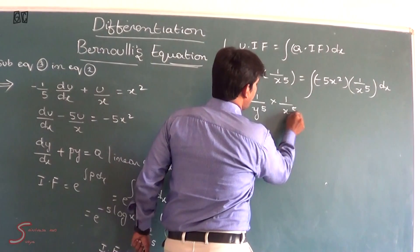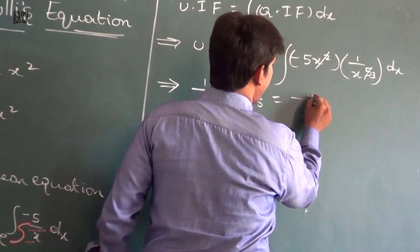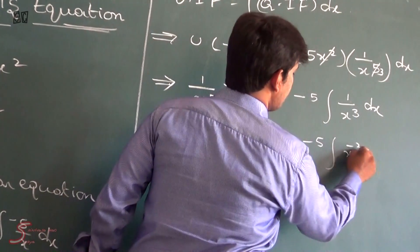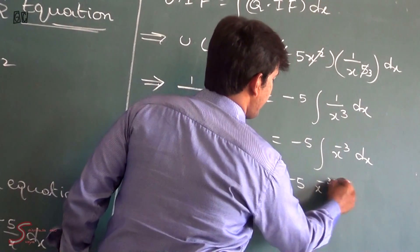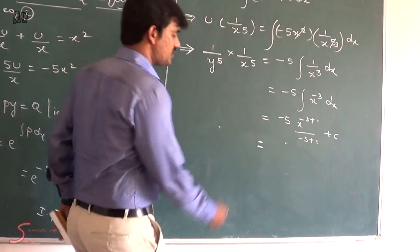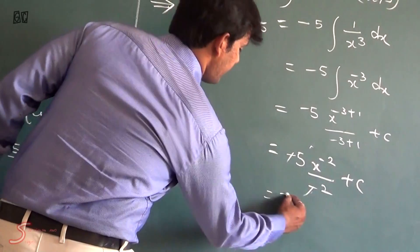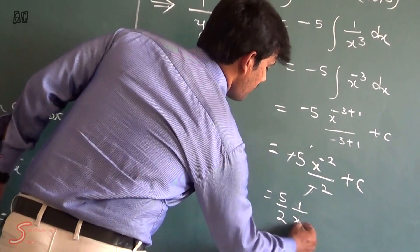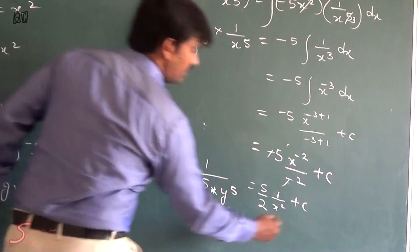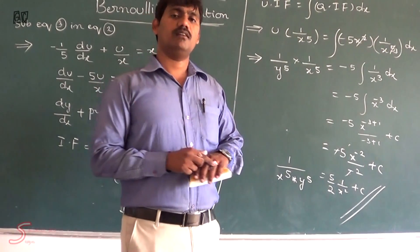Substituting: (1/y⁵) · (1/x⁵) = ∫−5x² · (1/x⁵) dx = −5 ∫x^(−3) dx = −5 · x^(−2)/(−2) + C = (5/2) · x^(−2) + C = 5/(2x²) + C. Therefore, 1/(x⁵ · y⁵) = 5/(2x²) + C. This is the complete solution for the given Bernoulli's differential equation.